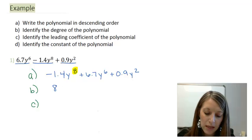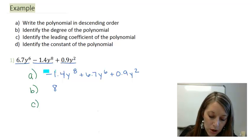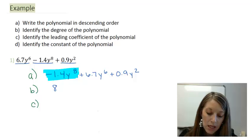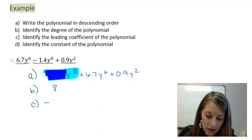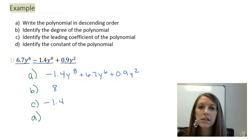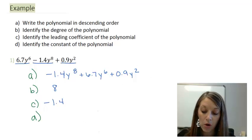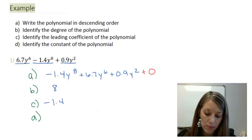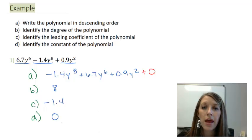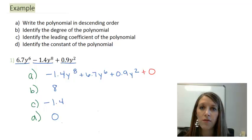For Part C, the leading coefficient is the number in front of the leading term — the term with the highest exponent. So our leading coefficient is negative 1.4. For Part D, the constant term is the term without a variable attached to it. This is almost a trick question because this polynomial has no constant term. But I can manipulate it by adding 0, which doesn't change the polynomial at all. So the constant term is 0 — if your polynomial doesn't include one, it's assumed to be 0.